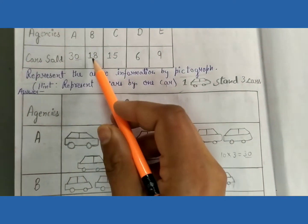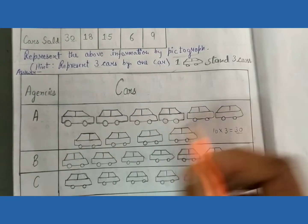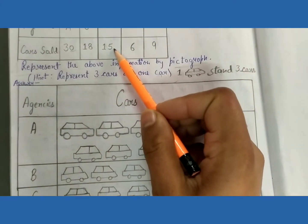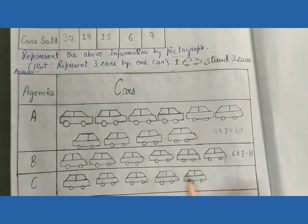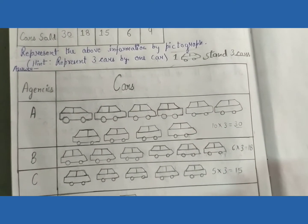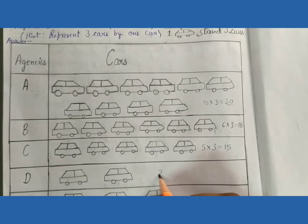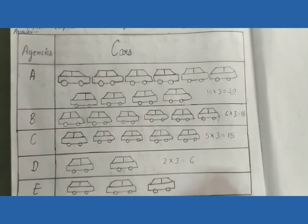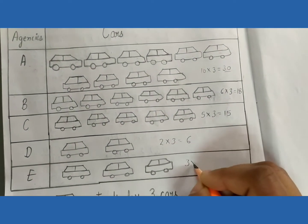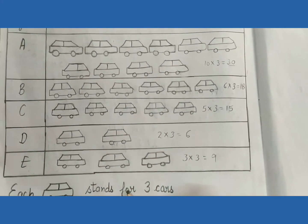Agency C: number of cars is 15, draw 5 car symbols. Each car represents 3 cars, 5 multiplied by 3 equals 15 cars. Agency D: number of cars is 6, draw 2 car symbols. 2 multiplied by 3 equals 6. Agency E: number of cars is 9, draw 3 car symbols. 3 multiplied by 3 equals 9. Each car stands for 3 cars. This is the answer.